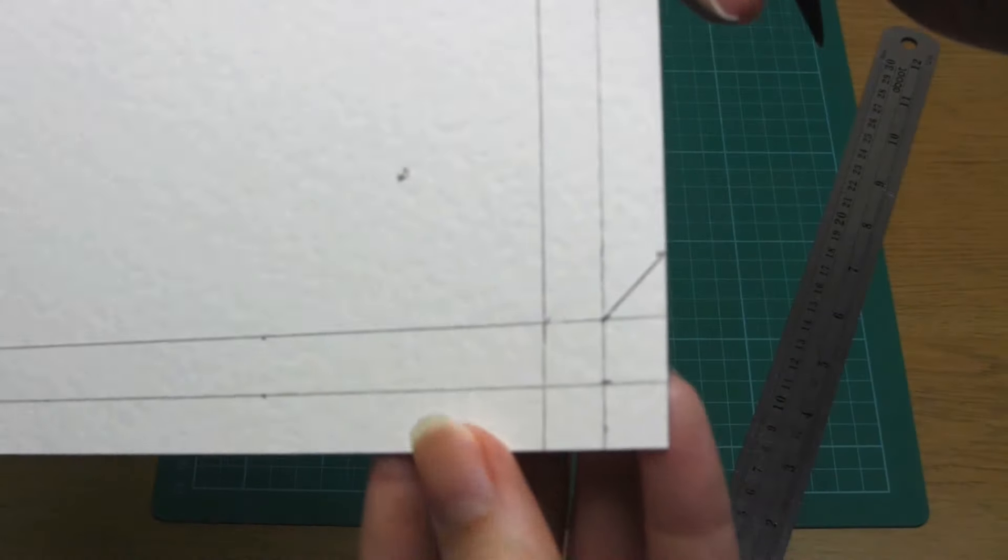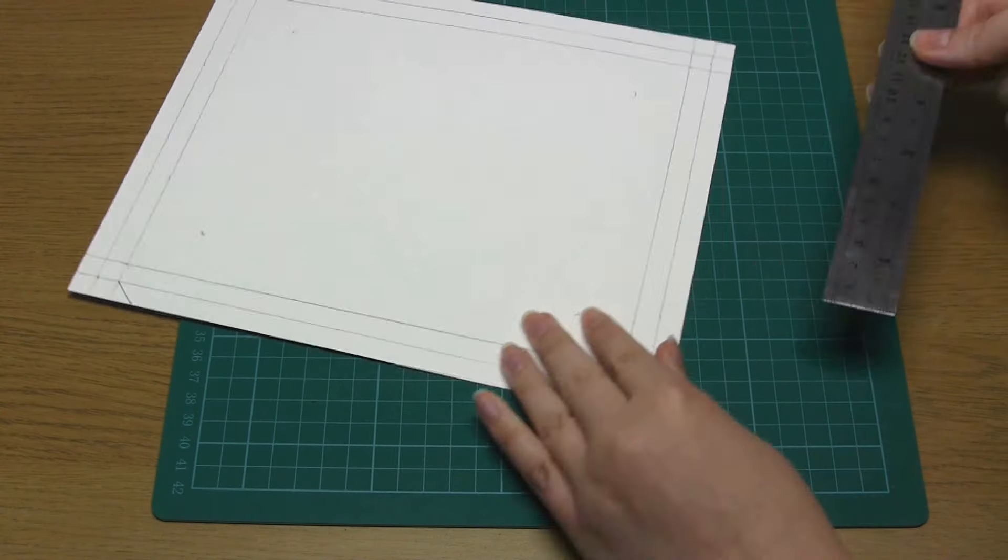Then draw a diagonal line from this mark to the corner square, like so. Do this at each corner.